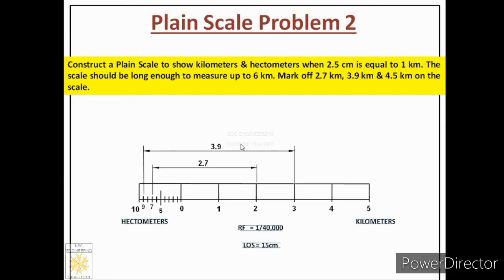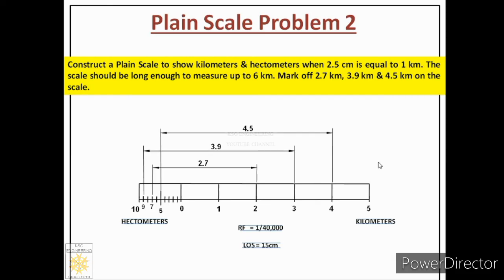Next is 4.5 kilometers, meaning 4 kilometers and 5 hectometers. From 0 to 4 we draw an extension line. Then from the 5th hectometer, leave a 1 millimeter gap and draw another extension line. Leaving a 10 millimeter gap, draw another dimension line with closed filled arrowheads and write the value 4.5 above it. Our answer is now complete. I hope this question is clear to you. Thank you very much.